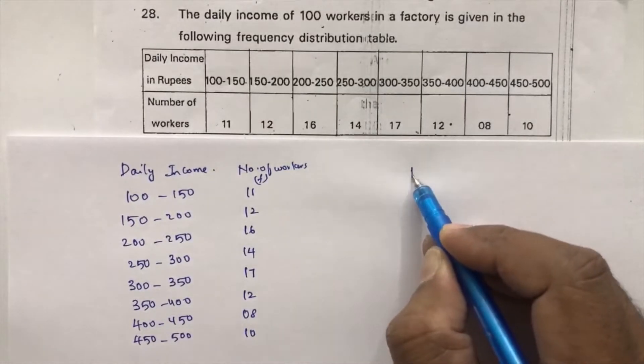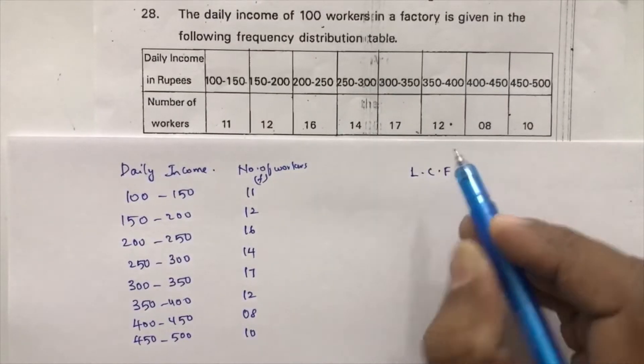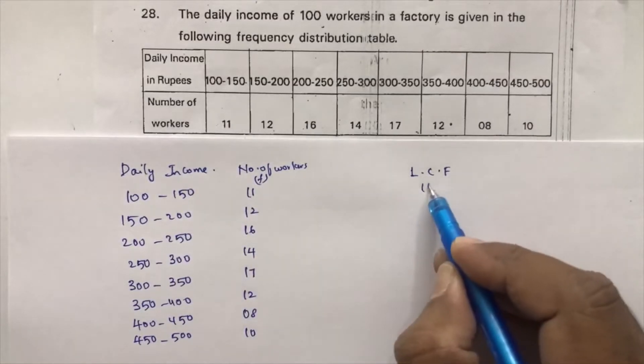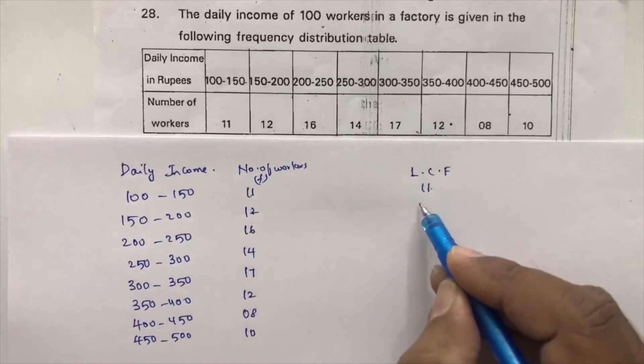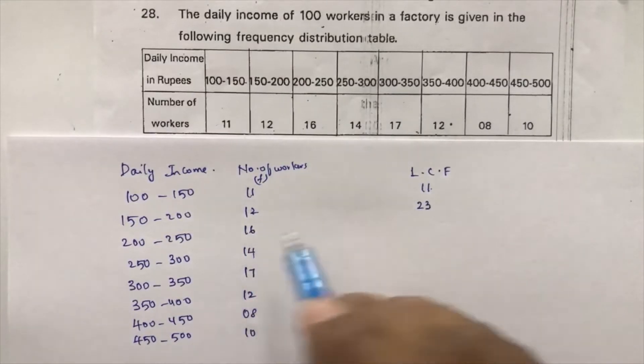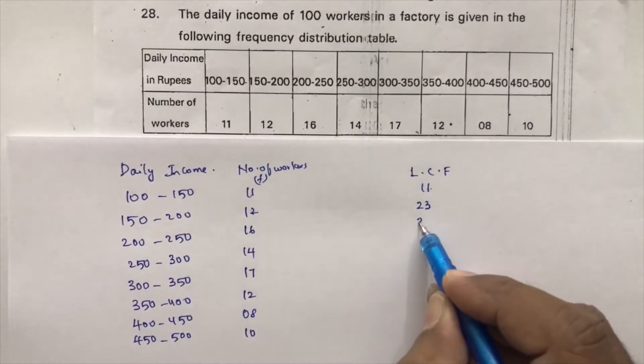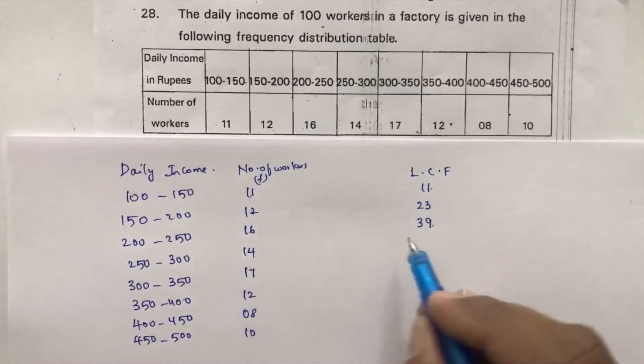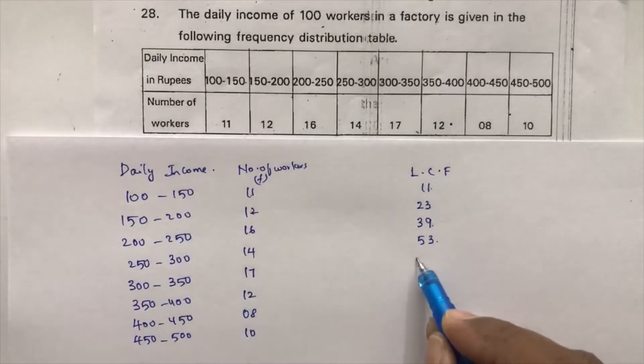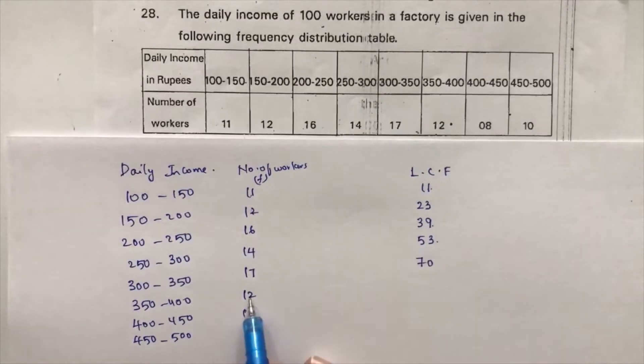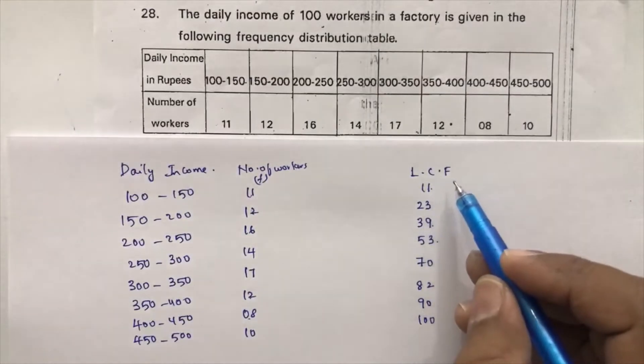See, for less than cumulative frequency, write here 11. First write here 11 as it is. 11 plus 12, it is 23. 23 plus 16, 39. 39 plus 14, 53. 53 plus 17, 70. 70 plus 12, 82. 82 plus 8, 90. 90 plus 10, 100.